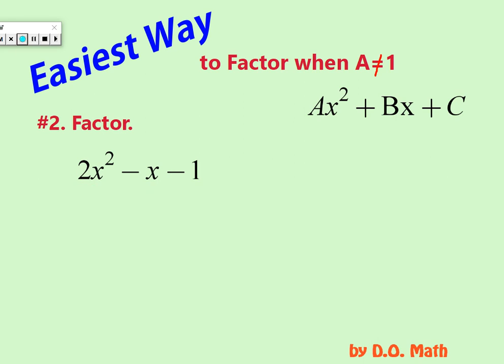What about this one? Let's try again. Here we have some negatives. So again, 2, you can have 1 and 2 multiplied. What about negative 1? You can have 1 times 1, but one of them has to be negative.